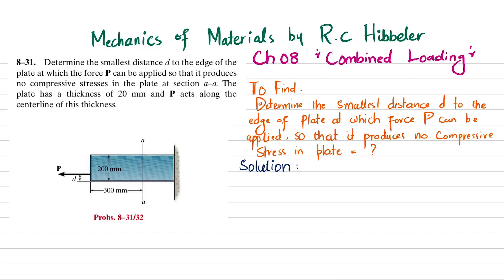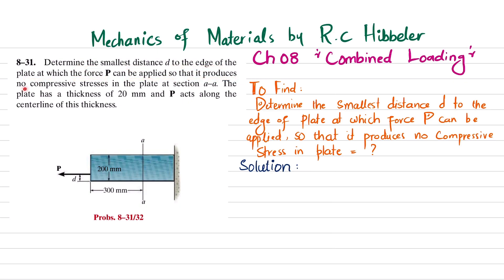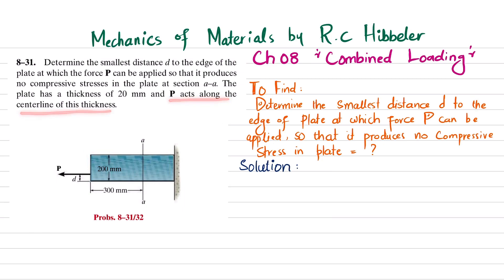Welcome back. Problem A-31. The statement of the problem is: determine the smallest distance d to the edge of the plate at which the force P can be applied so that it produces no compressive stress in the plate at section AA. The plate has a thickness of 20 millimeters and P acts along the centerline of this thickness.